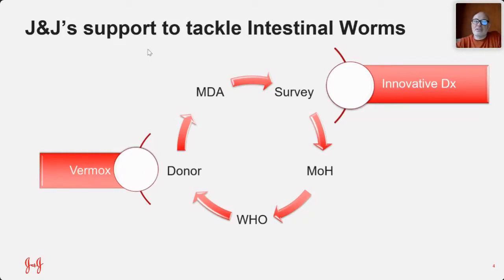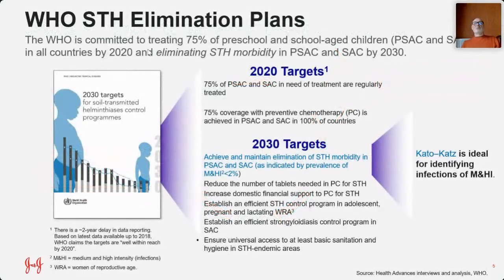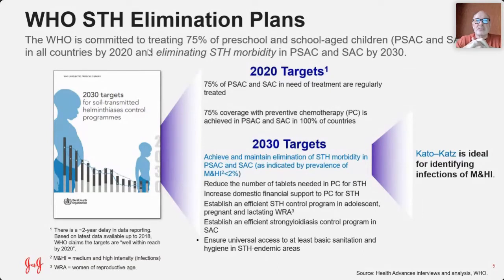When Johnson & Johnson says we are going to look into innovation on diagnostics, it is trying to improve that survey capacity. Last year, the WHO released 2030 targets for soil-transmitted helminth control programs, describing six ambitious goals.